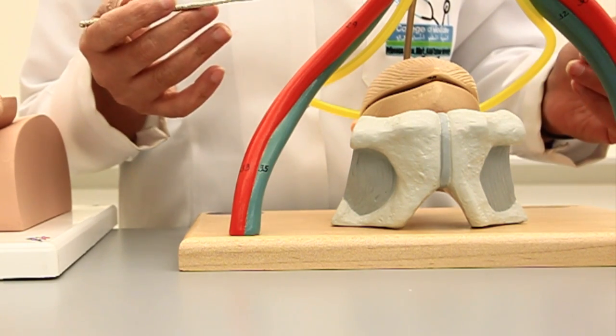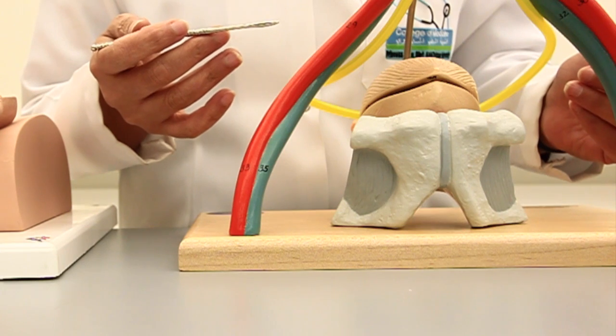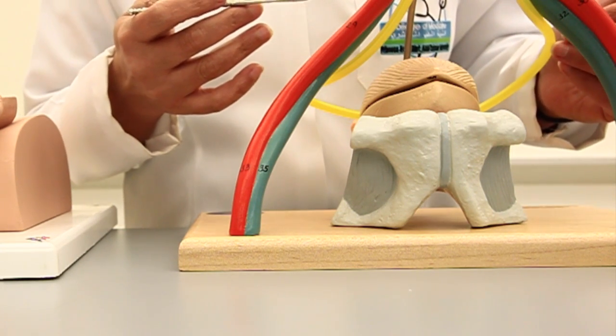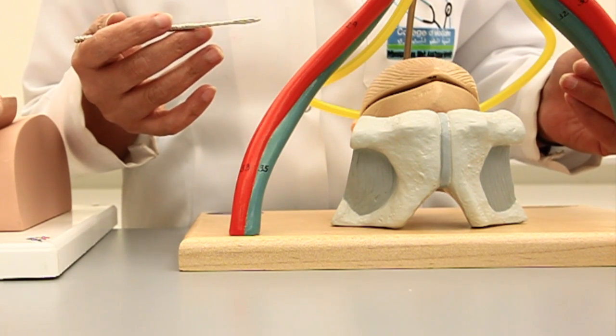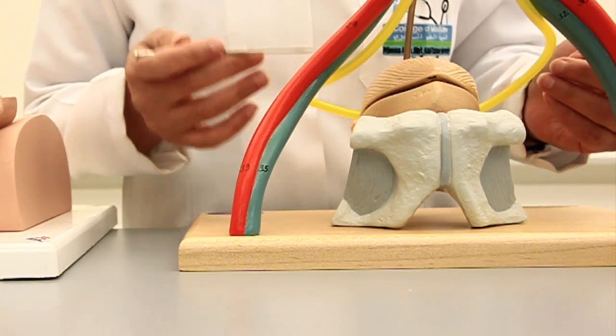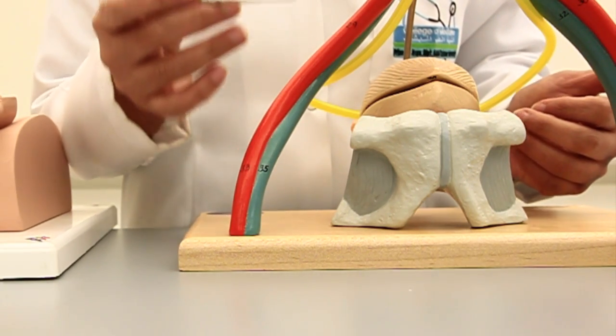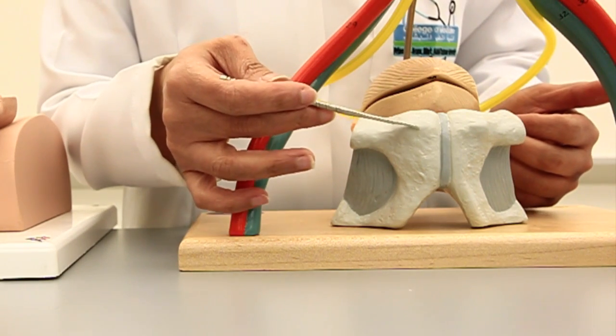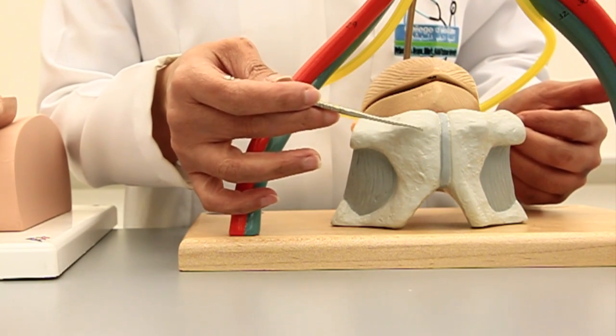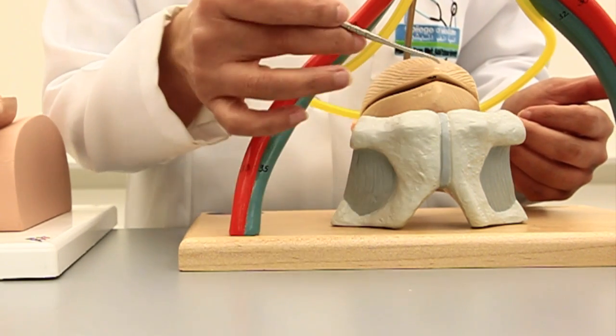The urinary bladder is a muscular organ of expandable nature. It's a highly expansile organ and in normal circumstances in an adult person it is lying behind the pubis, the pubic bones and symphysis pubis.